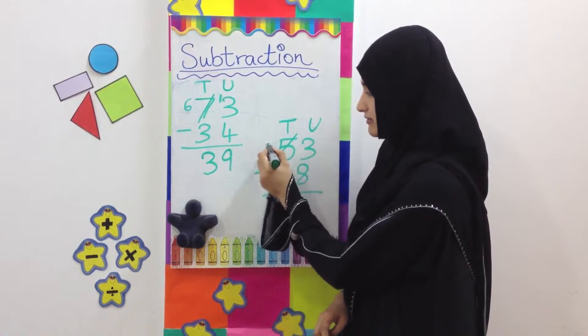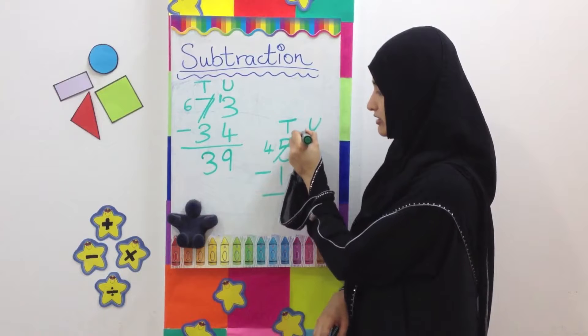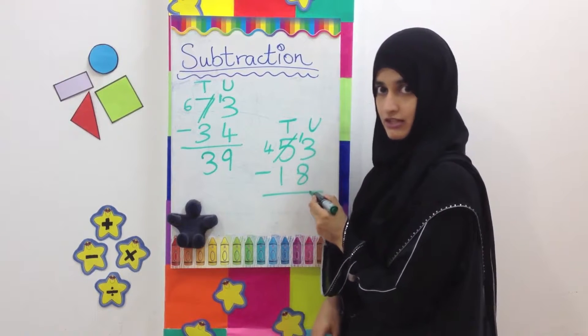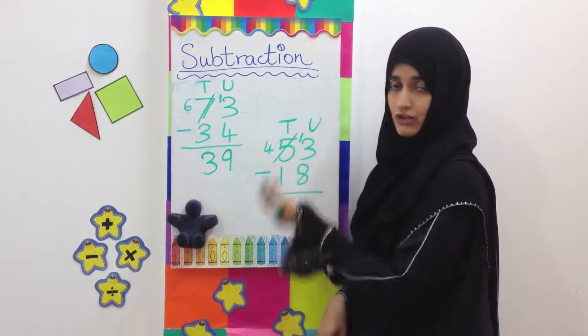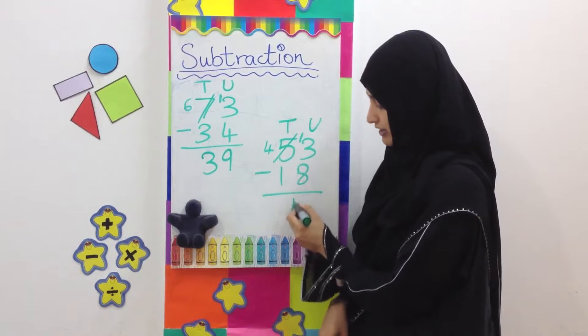This 10, the 10 side 5 becomes 4. The 1 is being borrowed here. We put it on this side. We have 13 minus 8. 13 minus 8. You can count back or you might know already the answer is 5. So you write 5 over here.